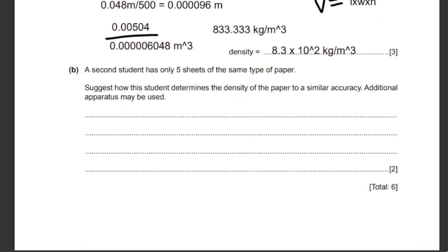Moving on to Section B. A second student has only five sheets of the same type of paper. Suggest how this student determines the density of the paper to a similar accuracy. Additional apparatus may be used.